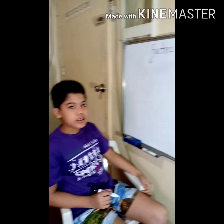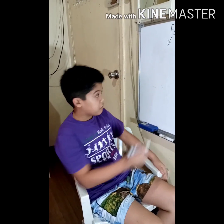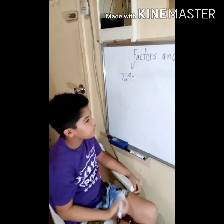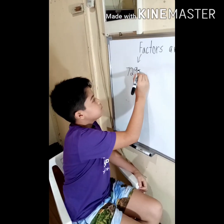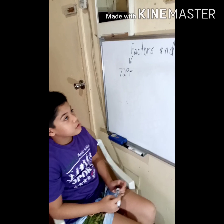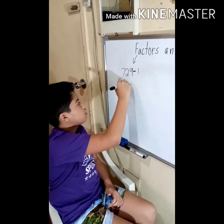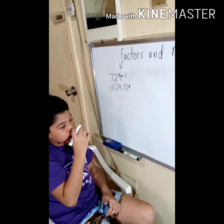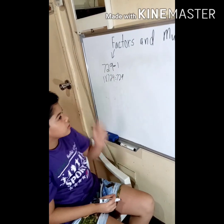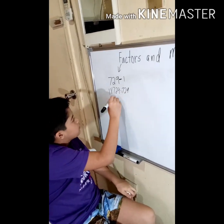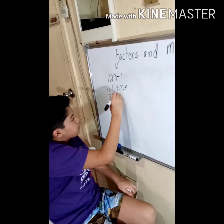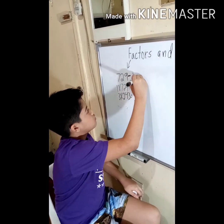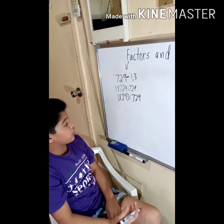The next number is 729. The factors of 729: of course 1, since 1 times 729 equals 729. 2 cannot be a factor because the last digit is not even. 3 times 243 equals 729, so 3 is a factor.